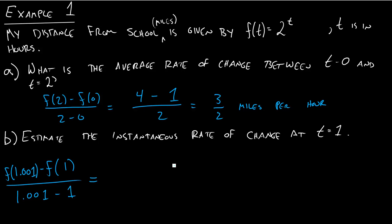So if I plug in f(1.001) into my calculator, I'll get something really close to 2. I'm going to get 2.001386775. If I plug in 1, I'm just going to get 2. And then I'm going to divide this by 0.001. If I plug all this into my calculator, I'm going to get 1.387 miles per hour still.